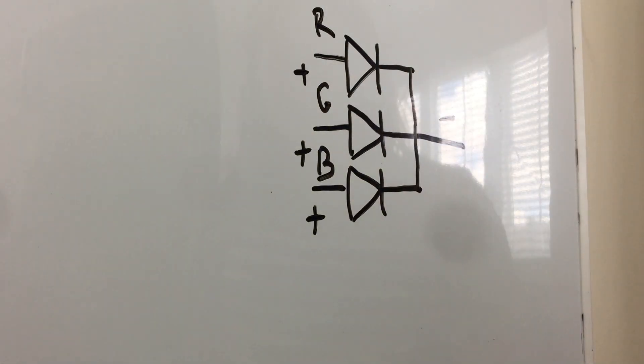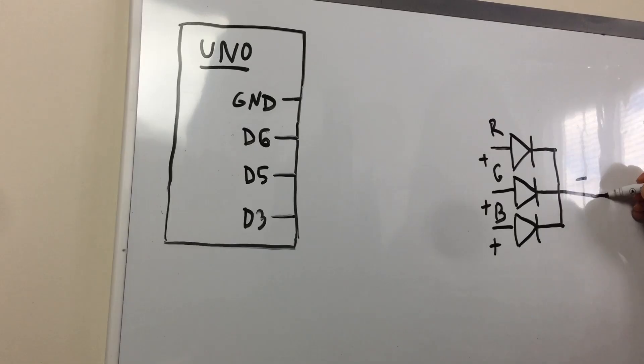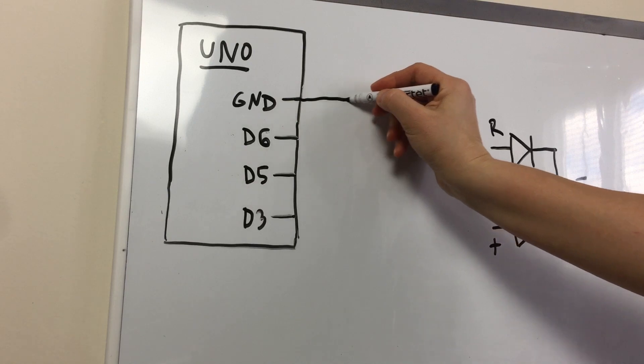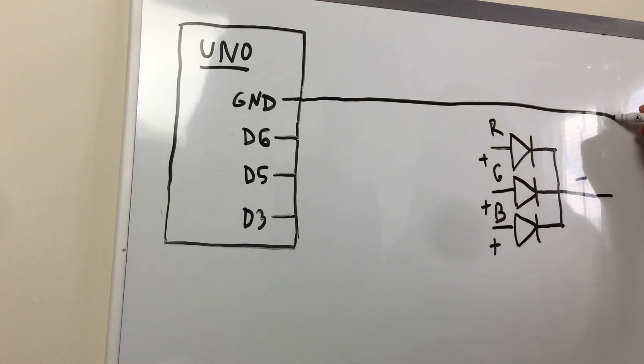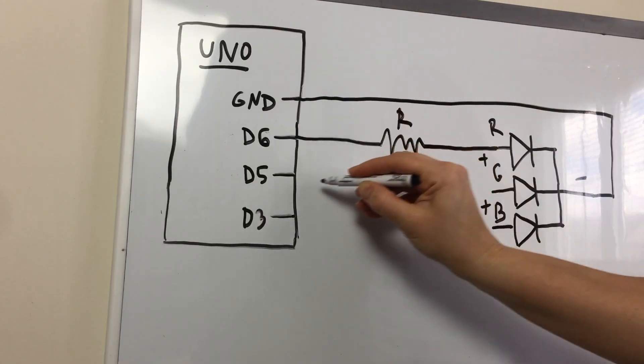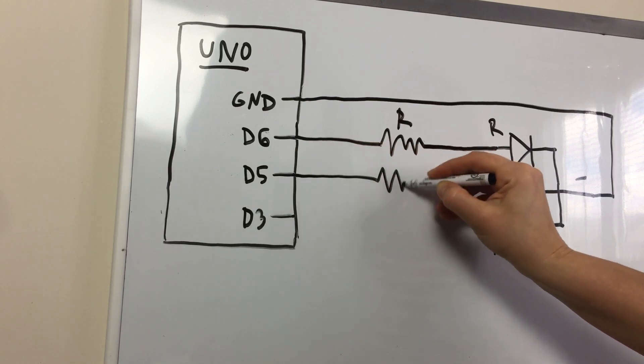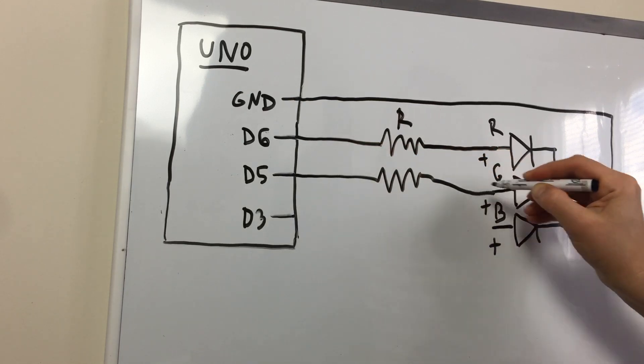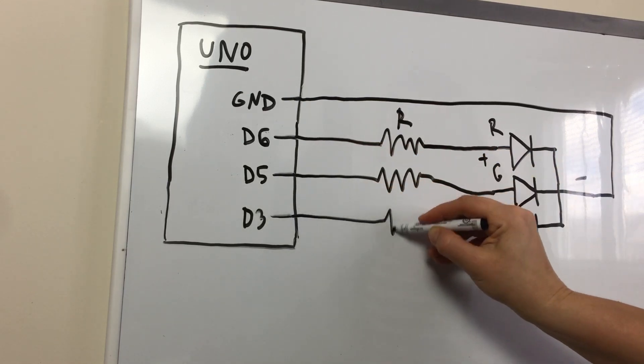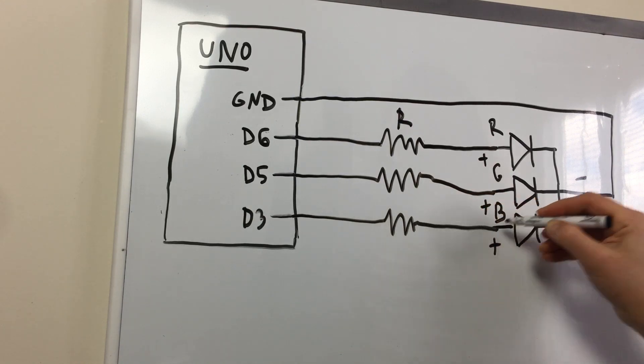This is a schematic for an RGB LED. The common negative terminal is called a cathode and will be connected to the ground. Each LED inside the package requires its own 220 ohm resistor to prevent too much current flowing through it.